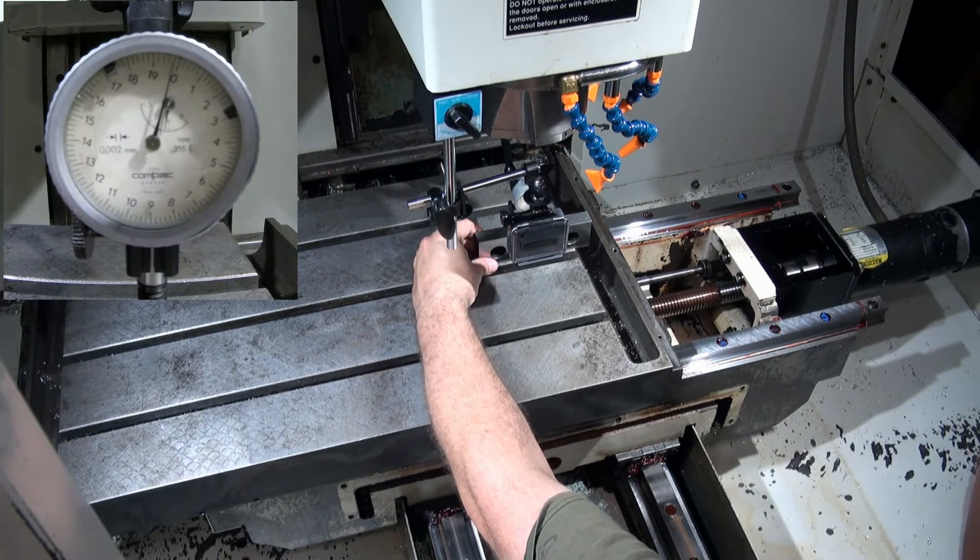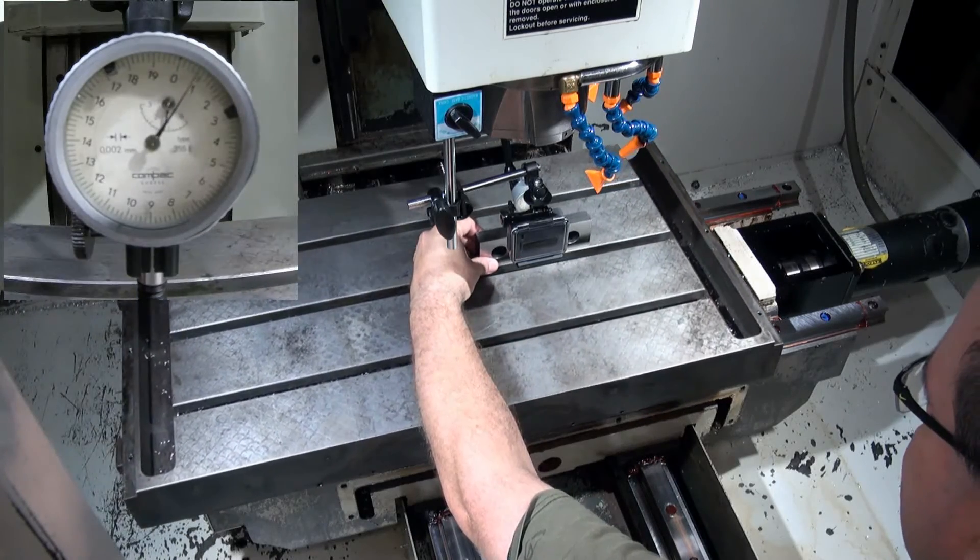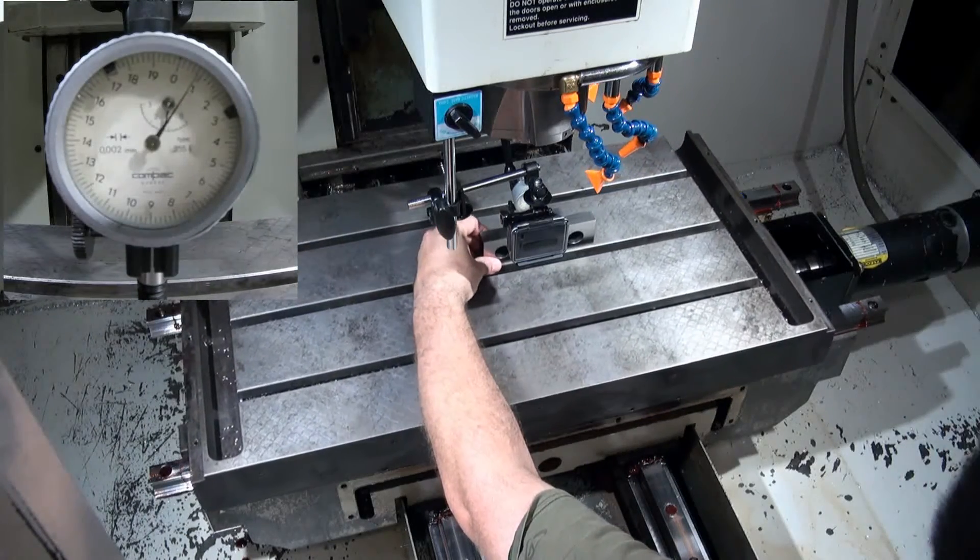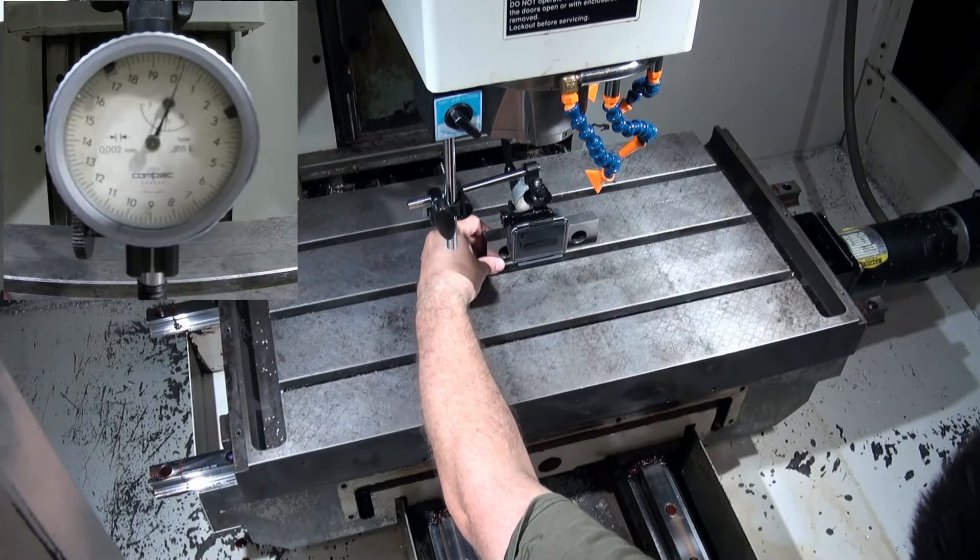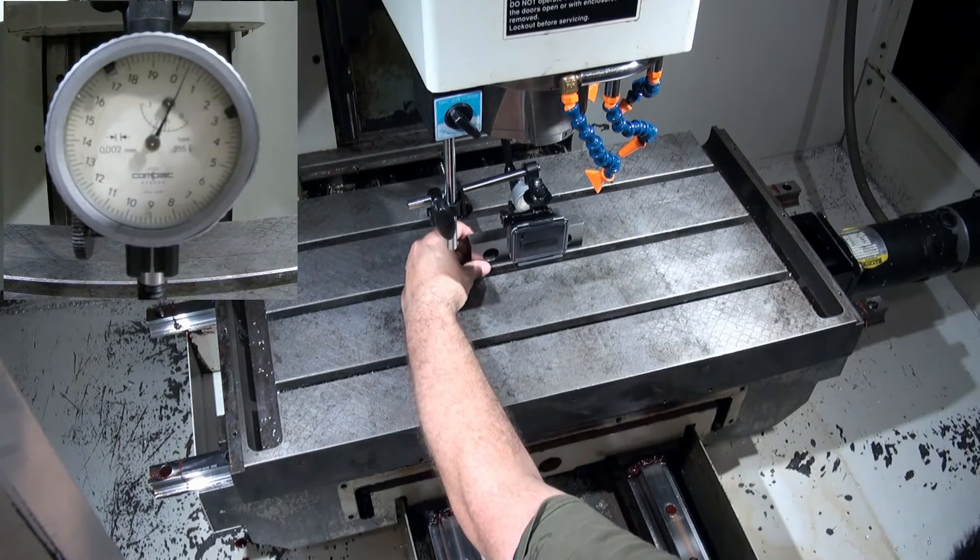So again, if we stay within the center of our table and use maybe about seventy-five percent of our travel, we've got way less than a thousandths of an inch of slope. The thousandths of an inch only shows up at the very end of the extremes. Again, that's related to the design of the saddle and the design of these machines. So let's check Y. Let's bring X back to center.